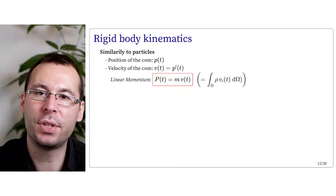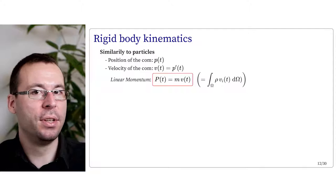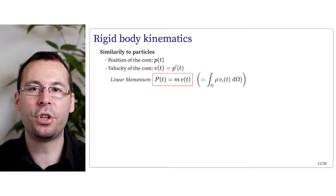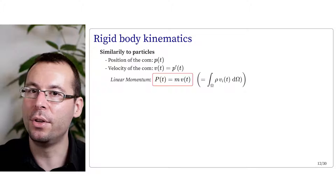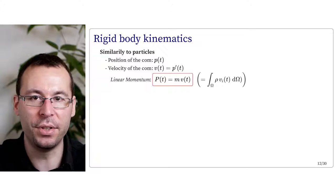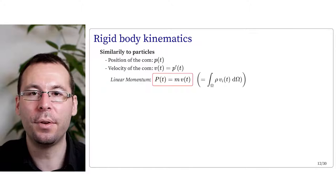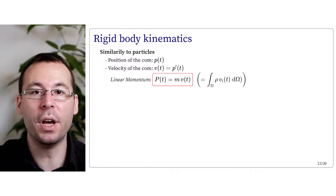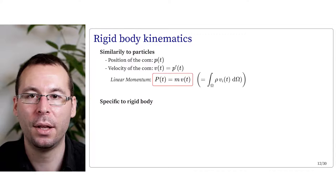Now let's see the fundamental quantities associated to the rigid body. Similar to a single particle, the center of mass has position p(t) and velocity v(t). We can define the notion of linear momentum which is preserved for an isolated system. The linear momentum of the rigid body is the integral over all its domain of its density of mass times the velocity at its point, which turns out to be simply the total mass times the velocity of its center of mass.